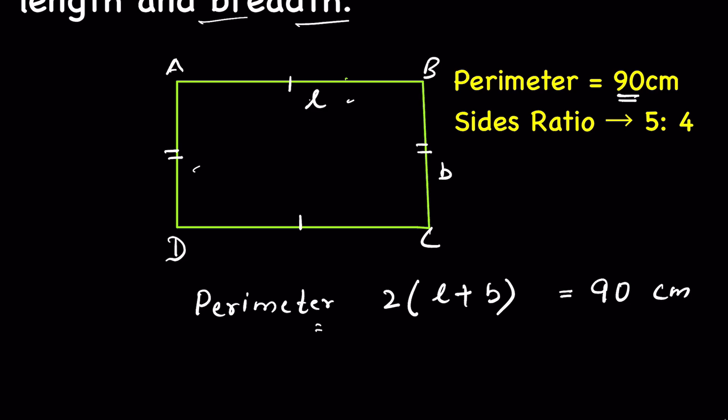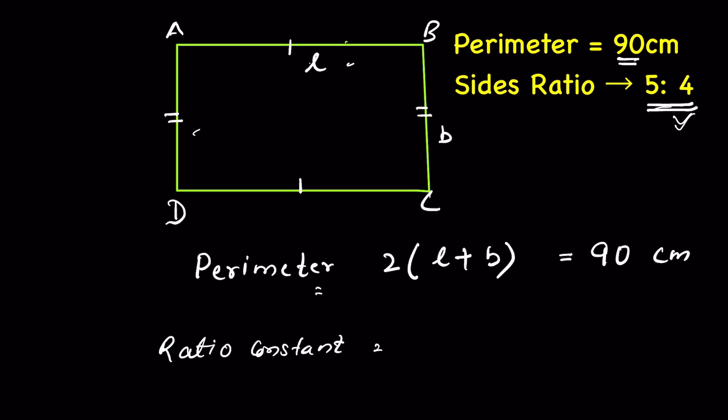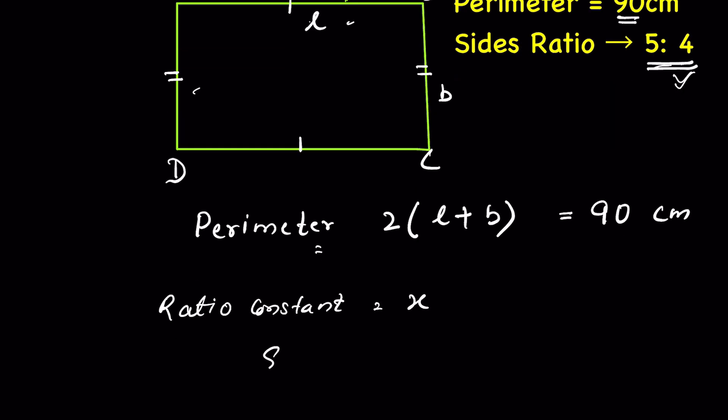Now given the sides ratio are 5 is to 4. Whenever the ratio is given we need to consider a constant and then find the ratio. Let's say the ratio constant is x, then sides are 5 times x, this is 5x and 4x. These will be the sides.